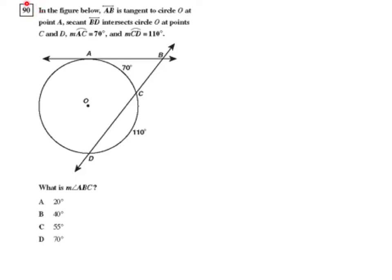Question 90 from the CST geometry release test questions. In the figure below, line segment AB is tangent to circle O at point A. So it's tangent to circle O, this circle here with center O, at point A.